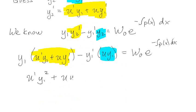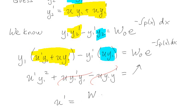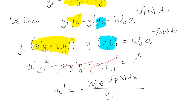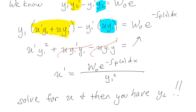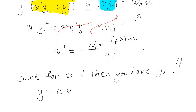After cancellation we're left with U'·Y1² = C·e^(-∫P(x)dx). So U' equals C·e^(-∫P(x)dx) divided by Y1². Given specific actual functions, we can solve for U, and then we have Y2 = U·Y1. Remember, we care about Y2 because Y is a linear combination of Y1 and Y2, so if we find Y1 but not Y2, we can use the Wronskian to find it — assuming we have the initial conditions we need, which in applications we often will.